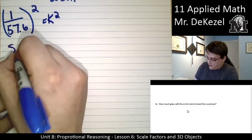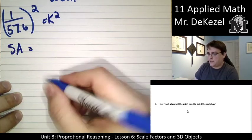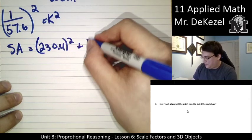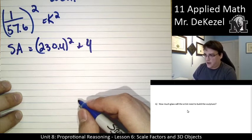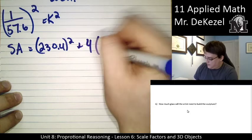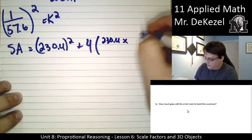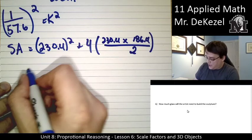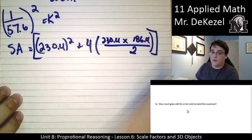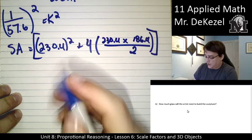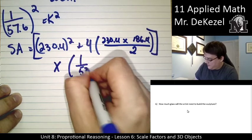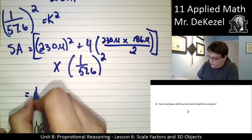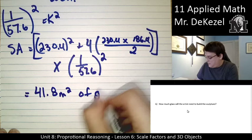So, let's see. The surface area is equal to the base area. The base area was 230.4 for one side. So, I need to square it. So, 230.4 squared for the base area plus four of the triangles on each side. So, for the area, I need the base and the slant height. So, that would be 230.4 for the base multiplied by 186.4 for the slant height. And then, all divided by two because it's the area of a triangle. So, I would find... And then... So, this is the surface area of the Pyramid of Giza, the large one. Now, I would need to multiply this by 1 over 57.6 squared because that's my k factor squared because we're talking about area. So, we would get 41.8 meters squared of glass needed.